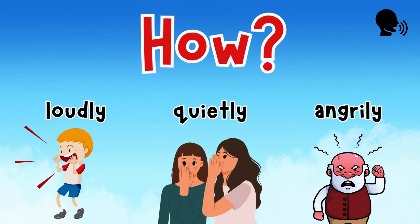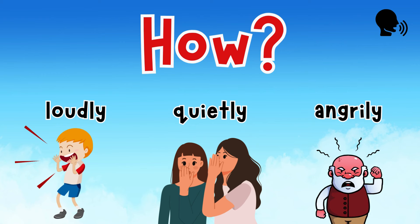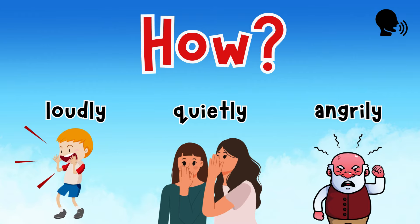Let's start with the first one: how. How is he speaking? He's speaking loudly. She's speaking quietly. And he's speaking angrily.